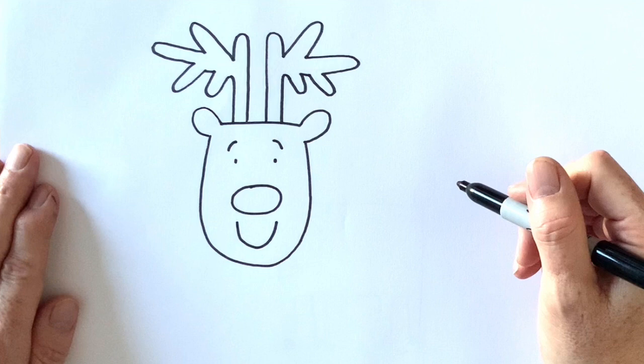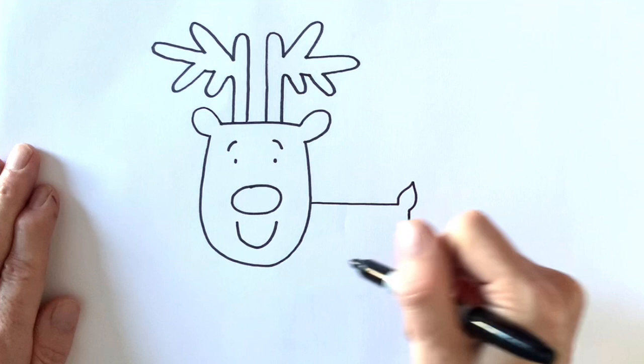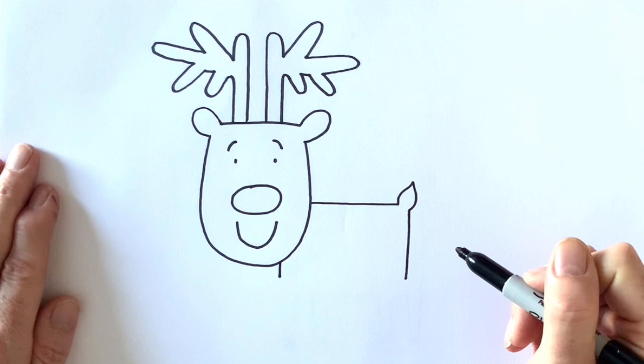Now it's time to give the reindeer a body. So I'm going to draw a straight line for its back and give it a little tufty tail and a straight line for its bottom end. And I'm just going to add a little line here at the front. Now, the reindeer needs some legs, doesn't it?